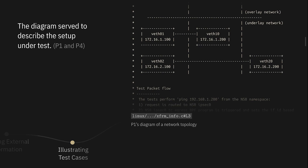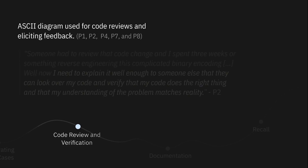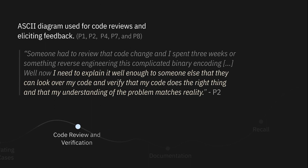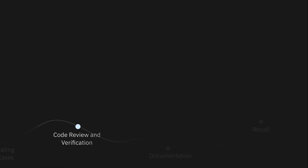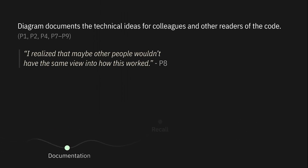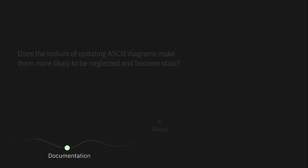In our content analysis, 11% of the diagrams we examined had to do with a test case. Diagrams were also important for code reviews and getting feedback. As P2 put it, 'I need to explain it well enough to someone else that they can look over my code and verify that the code does the right thing and that my understanding of the problem matches reality.' It's also a common practice to find them in commit messages, at least in the networking sub-area of the Linux kernel. There's an interesting conversation in the paper about whether the tedium of making these diagrams might make it more likely for them to become stale.